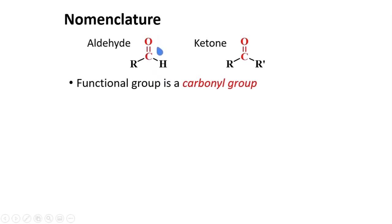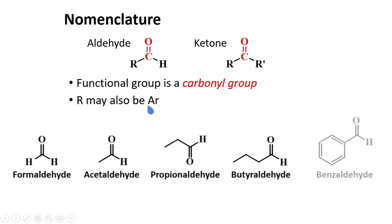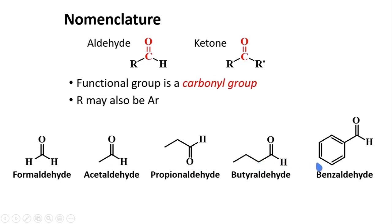The structure of aldehydes and ketones are characterized by the presence of a carbonyl group. The R group may also be an aryl group or an aromatic moiety. Here are examples of aldehydes: one with only a carbonyl group is called formaldehyde; with two carbons is acetaldehyde; then propionaldehyde, butyraldehyde, and benzaldehyde. These are common names.